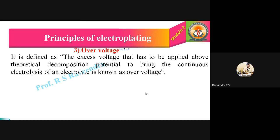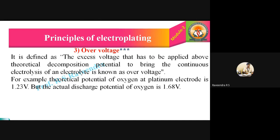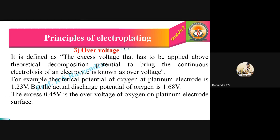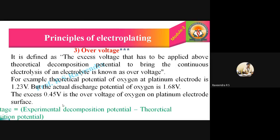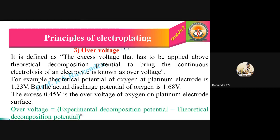For example, the theoretical potential of oxygen at a platinum electrode is 1.23 volts, but the actual discharge potential of oxygen is 1.68 volts. The difference between 1.23 and 1.68 is approximately 0.45 volts. This 0.45 volts is the over voltage of oxygen when using a platinum electrode surface. The formula is: over voltage = experimental decomposition potential − theoretical decomposition potential.